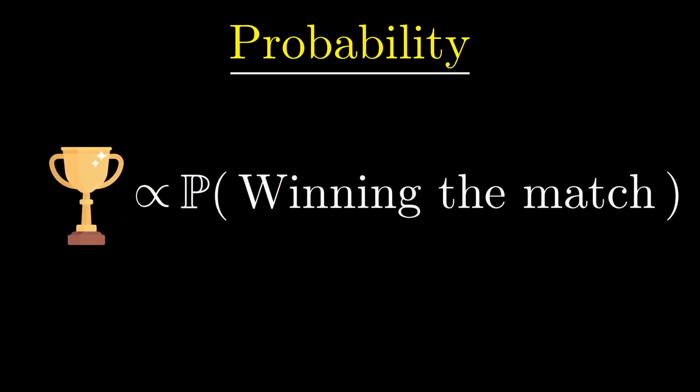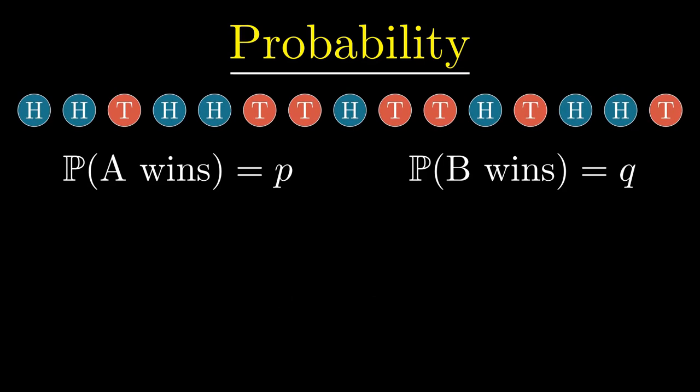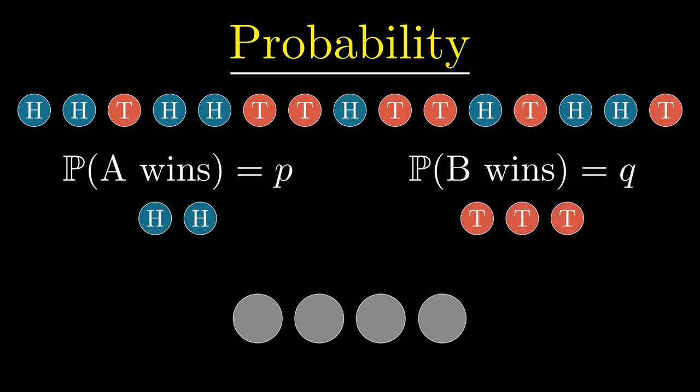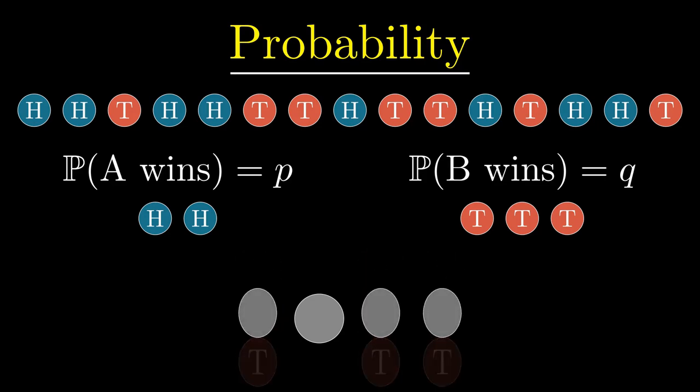Let's say the probability of the coin landing heads is P and tails is Q, with P plus Q equals 1. Because A needs 2 more wins and B needs 3 more wins to win the match, we need a maximum of 4 tosses to decide the winner. A wins the match if he gets 2, 3, or 4 heads out of these 4 tosses, whereas B wins if he gets at least 3 tails.